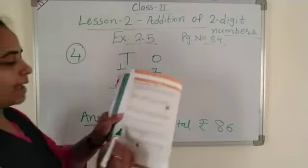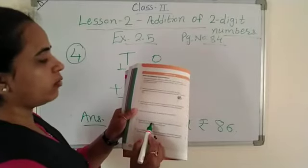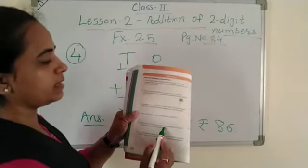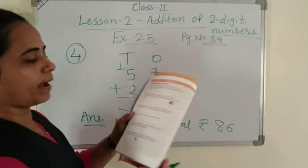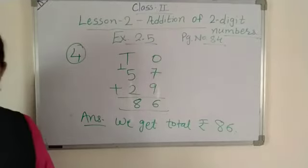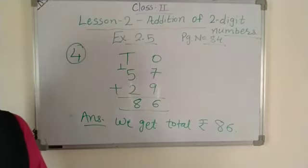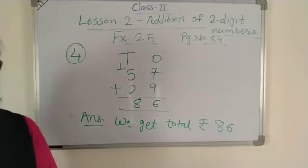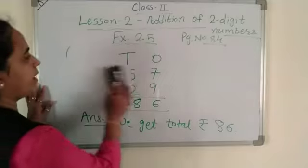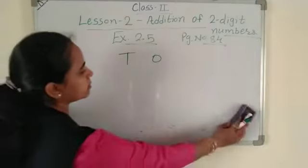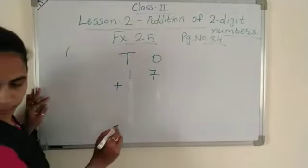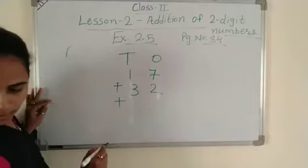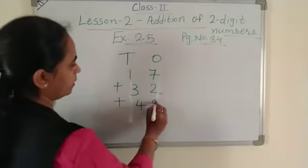Now number 5. Read: Rajesh got 17, 32, and 49 marks in 3 different subjects. Find the total marks obtained by him. Rajesh got how many marks in 3 subjects? One subject: 17, second: 32, and third: 49. Add these numbers. Number 5: you have to add 3 numbers. 17 plus 32 plus 49.